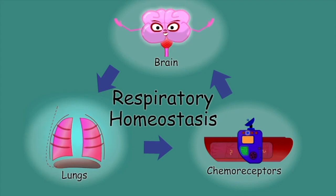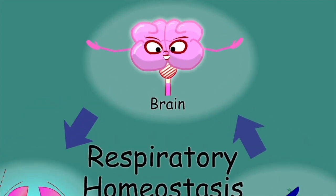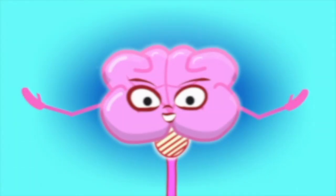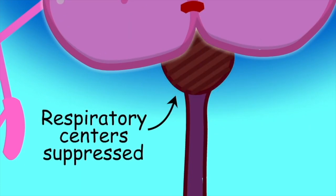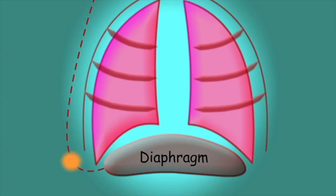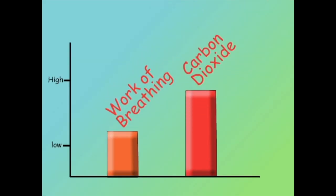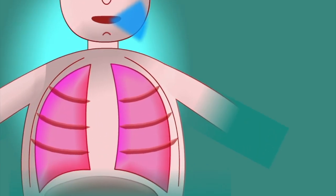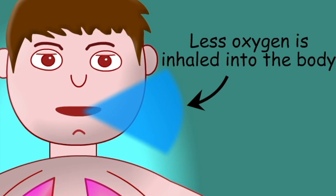Problems arise when these regulatory mechanisms begin to fail. Several causes of hypercapnia can arise from issues within the brain. A serious neurological assault such as brain trauma has the potential to suppress the respiratory centres of the brain stem. As a result, the lungs receive less stimulus from the brain, resulting in slower, shallower breaths. As the work of breathing reduces, blood CO2 levels will rise. We may also find that as the effort put into inhalation decreases, blood oxygen levels will reduce as carbon dioxide levels rise.